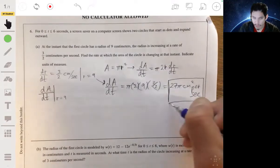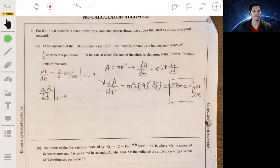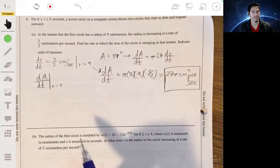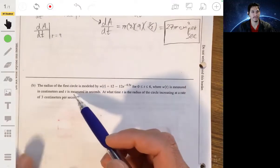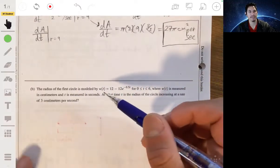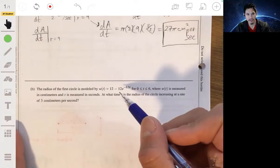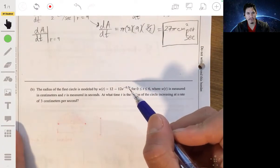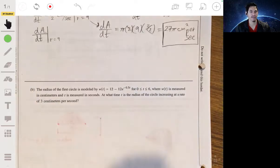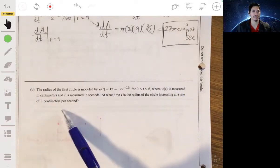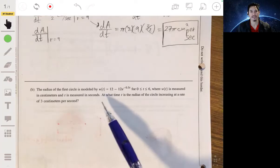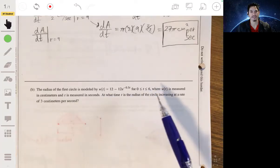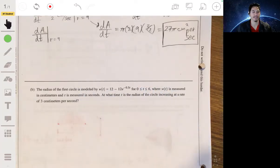And there you go. Cool. Part B: the radius of the first circle is modeled by this equation, w(t) = 12 - 12e^(-0.5t) for t between 0 and 6, where w(t) is measured in centimeters and t is measured in seconds. At what time t is the radius of the circle increasing at a rate of 3 centimeters per second?